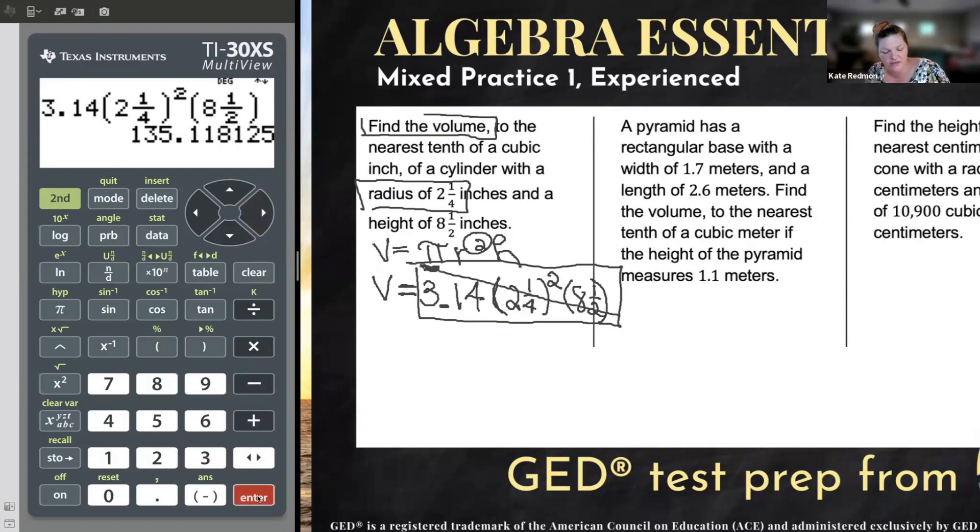Enter. And that whole ugly thing comes to one, three, five point, yada yada yada yada yada. You don't have to write all this down because you might have already noticed that there are rounding directions. Look at that.